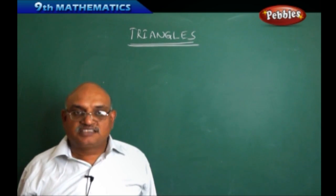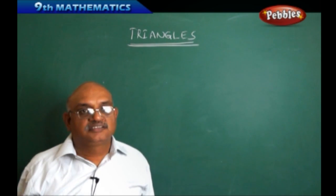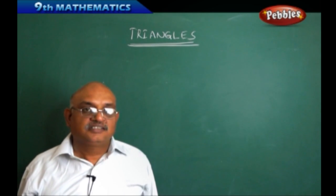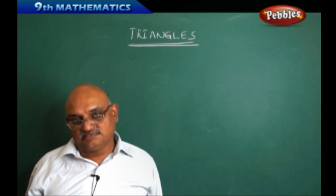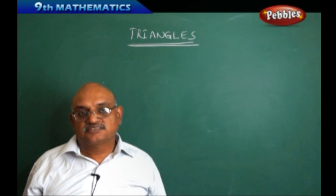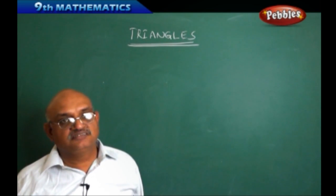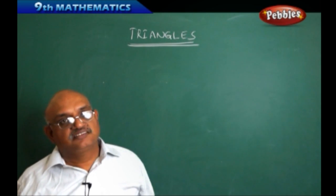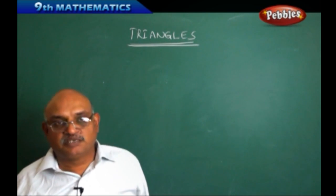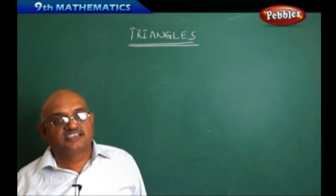Suppose I have a triangular park and I want to construct a wall with a certain angle at some vertex. First, I have to design a model with small sides — that is, with a small length only I will design a model. I want to see that the biggest triangle is proportionate to this, with the same angles, which I am going to construct.